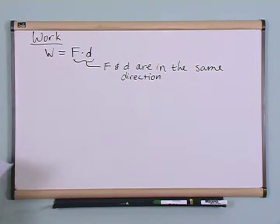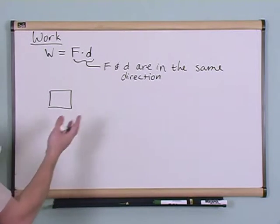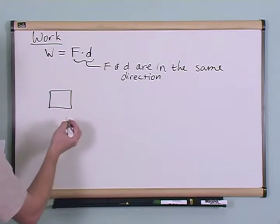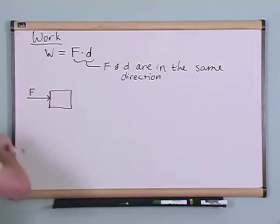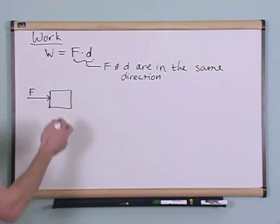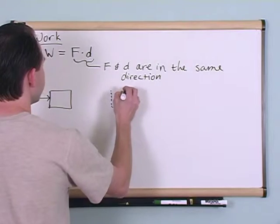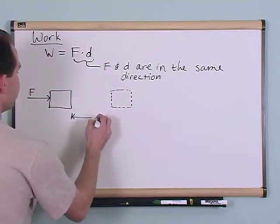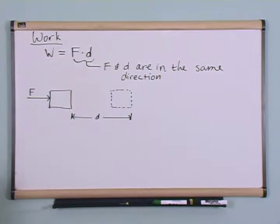What do I mean by that? I'm going to just draw a quick block here, so there's some block I'm trying to move. I'm going to do work on this block, right? So let's say I apply some force to the block. That's the force I'm talking about here, and then eventually that block's going to move because I'm pushing on it after all, and the block is going to move some distance over to the right.